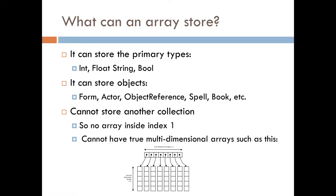So what can an array store exactly? Well, it can store the primary types: your integers, your floats, your strings, and your booleans. You can also store objects such as forms, actors, object references, spells, books, just anything that is a script object it can store in there.